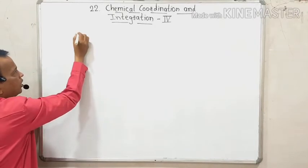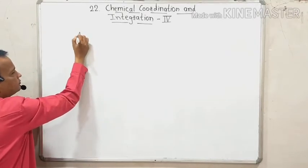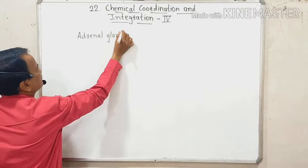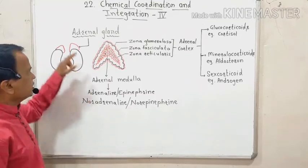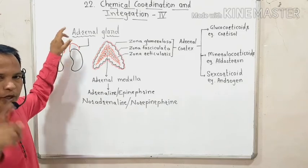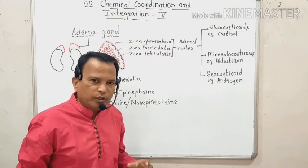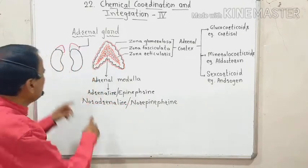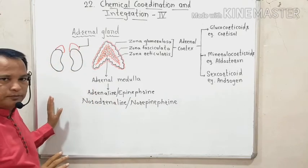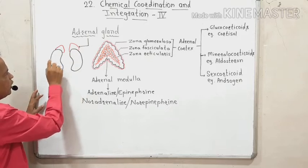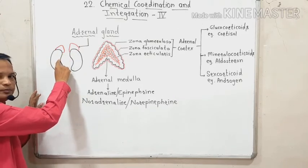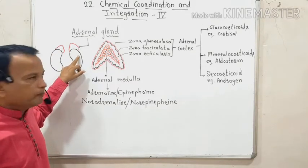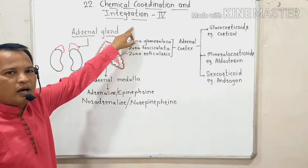Adrenal gland is also called suprarenal gland. A pair of adrenal glands is present in the human body. Adrenal glands are situated on the anterior pole — the anterior side, or you may say the superior pole — of each kidney. They are a pair of cap-like, triangular structures present on the anterior side of the kidney, and are called adrenal gland or suprarenal gland.